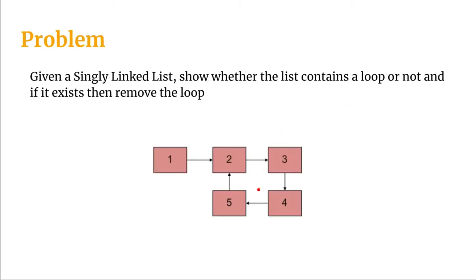Looking at the diagram: at the beginning, slow and fast both point to head. In the first iteration, slow advances to node 2 and fast advances to node 3. In the next iteration, slow is at 3 and fast is at 5. Then slow becomes 4 and fast becomes 3. In the next iteration, slow becomes 5 and fast also becomes 5. At this point slow and fast are the same node, confirming a loop exists.